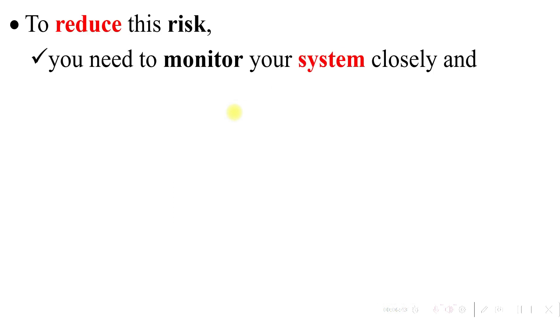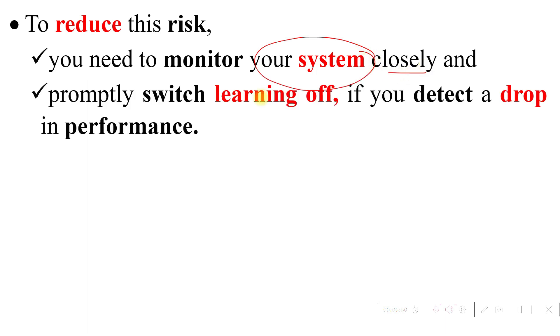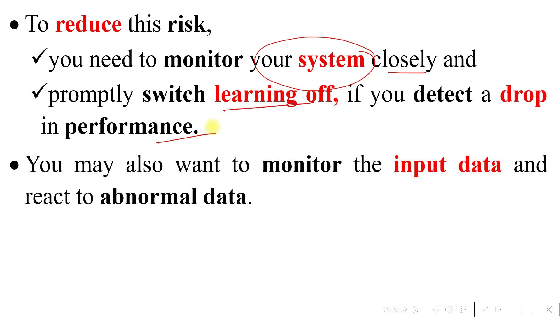To reduce this type of risk, you need to monitor your system closely and promptly switch off learning if you detect a drop in performance. You may also want to monitor the input data and react to abnormal data.